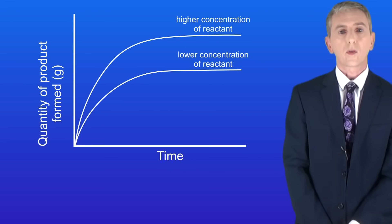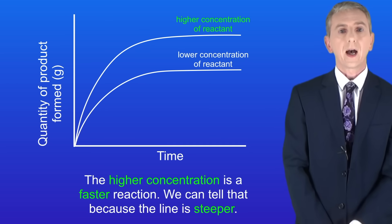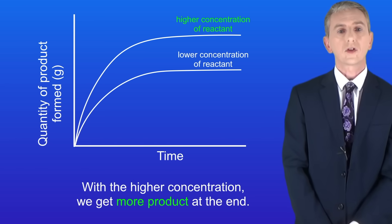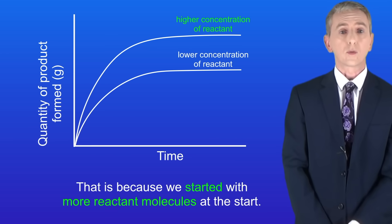Now if we plot the quantity of product for these reactions then we can see that the lines look different. Firstly, the higher concentration is a faster reaction and we can tell that because the line is steeper. Secondly, with the higher concentration we get more product at the end. That's because we started with more reactant molecules at the start.